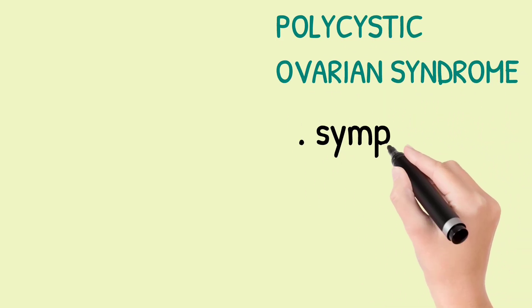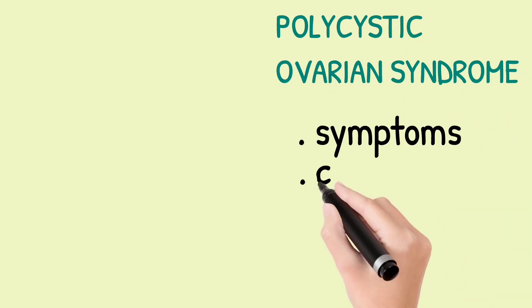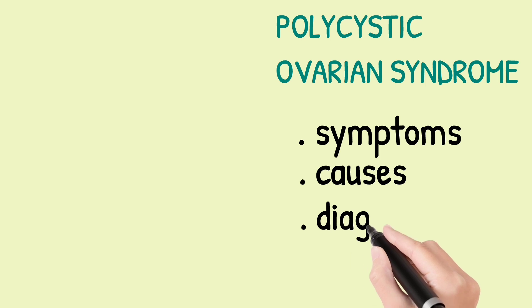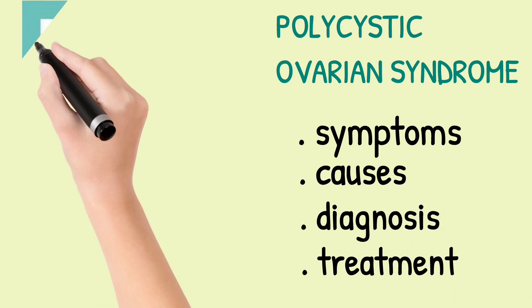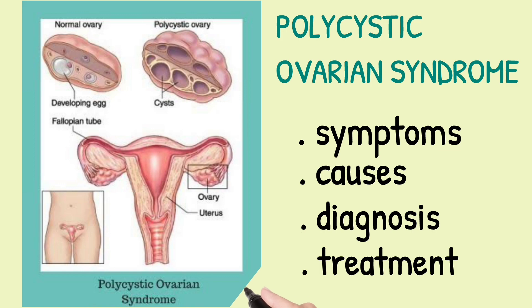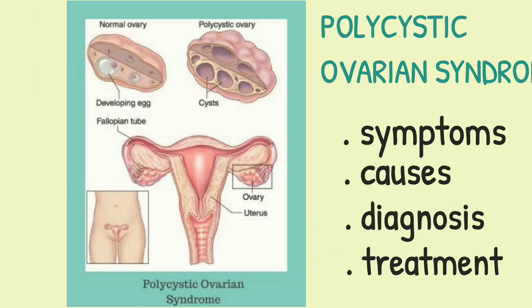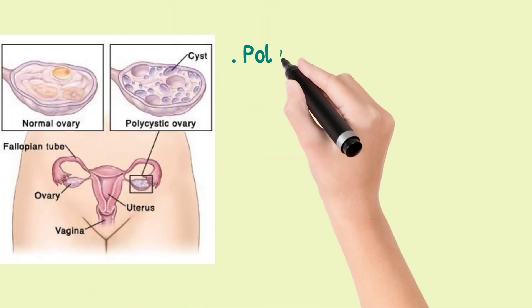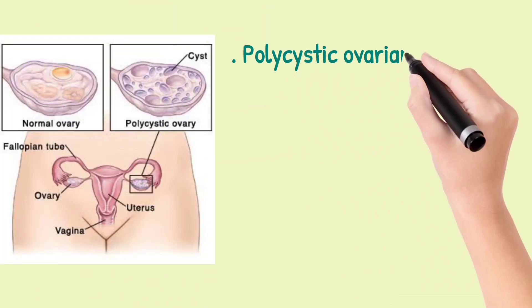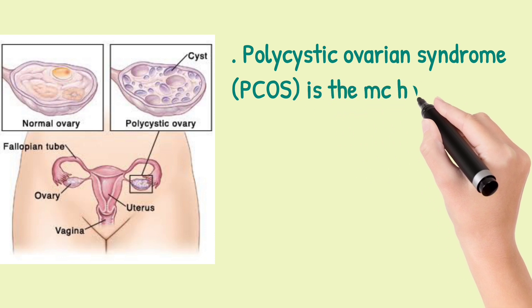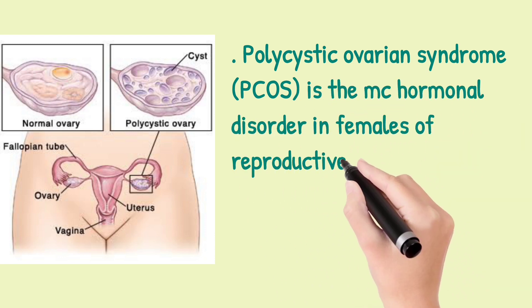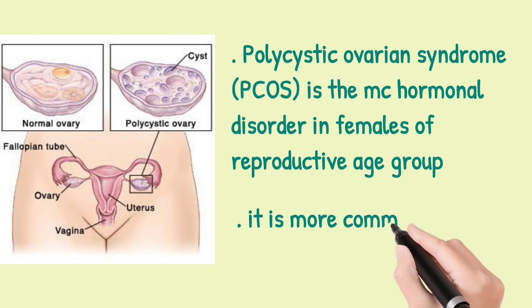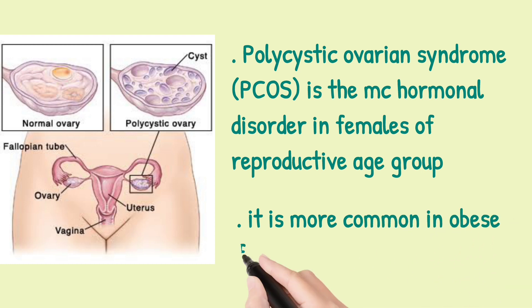Polycystic ovarian syndrome: what are its symptoms, causes, how it is diagnosed and treated. Hello and welcome to Mini Medicos. Polycystic ovarian syndrome is the most common hormonal disorder in females of reproductive age group and is more common in obese females.